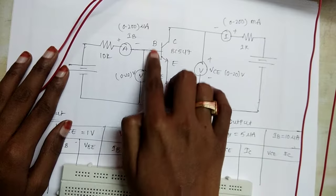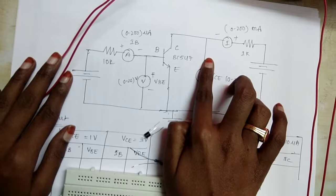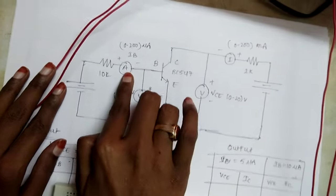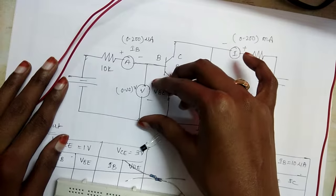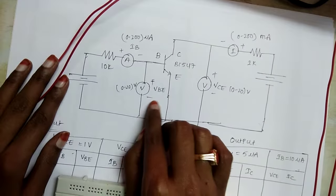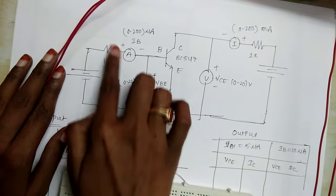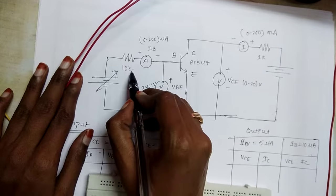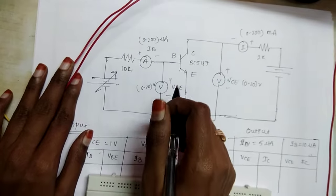In CE configuration, the input side is the base and the output side is the collector. The emitter is common to both input and output. To measure the input current, we use an ammeter, and to measure the voltage between base and emitter (VBE), we use a voltmeter. A 10K resistor is used to limit the current through the circuit.